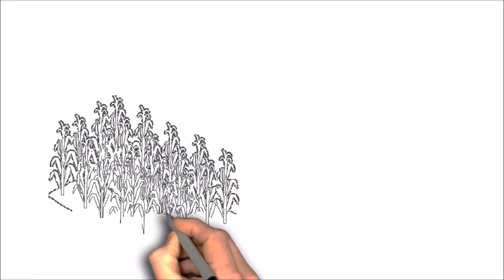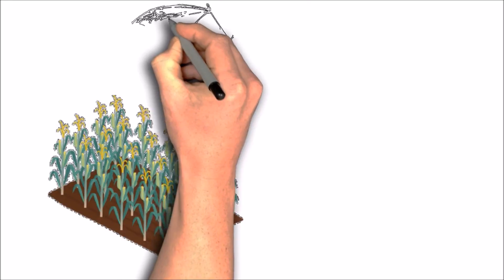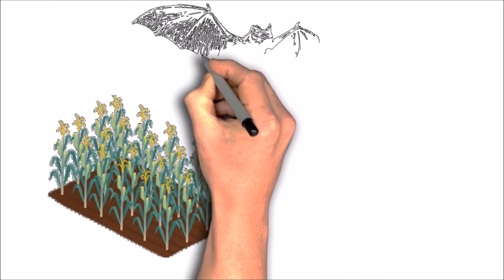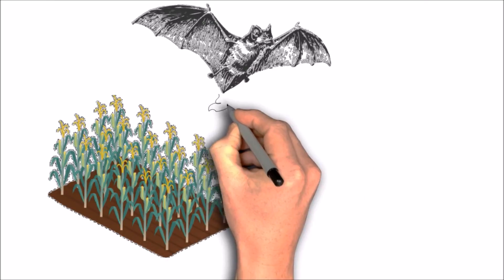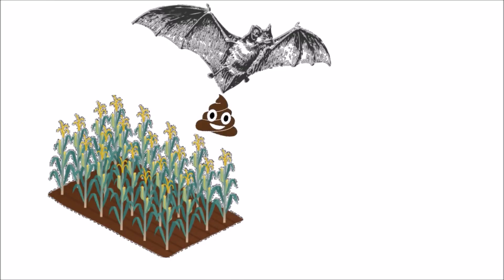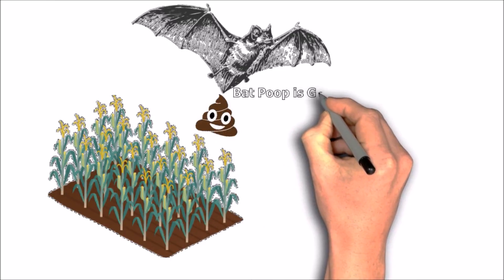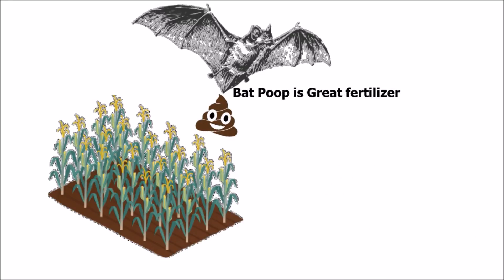But, on a normal day, let's just say they're flying around doing their thing. We'll get into what their thing is, but just flying around doing their thing. When they take a deuce, that is great fertilizer for crops and other things.